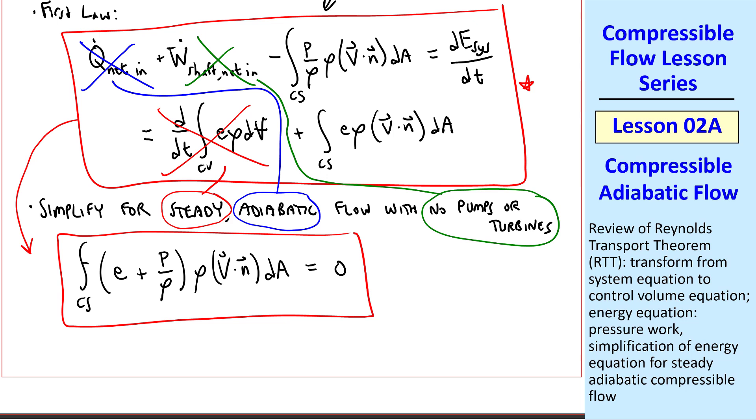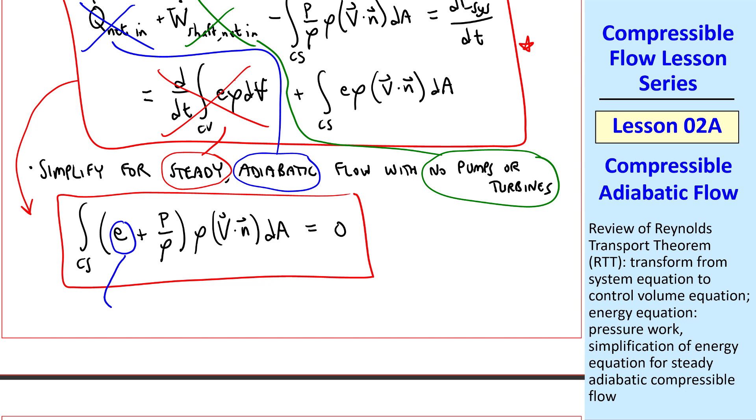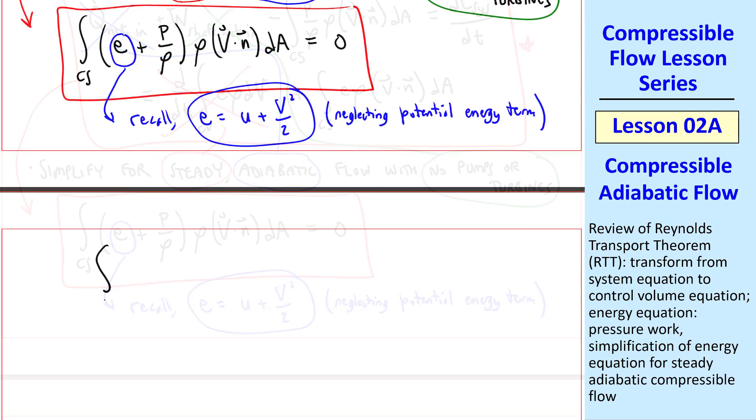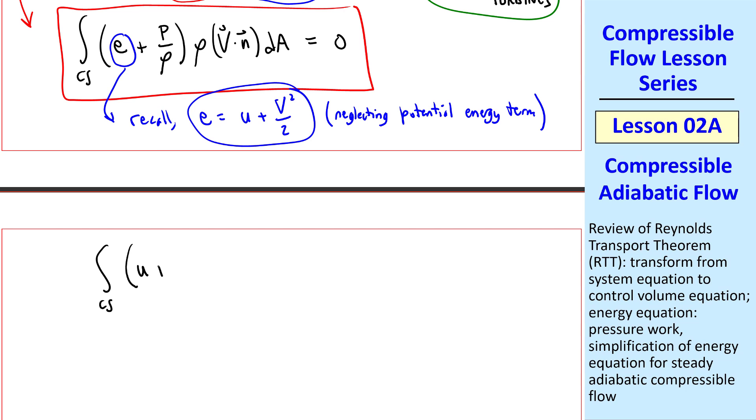Another thing we'll do is recall that specific total energy is specific internal energy, plus specific kinetic energy, where we'll always be neglecting the potential energy term, since we're dealing with gases at high speed. Plugging this into the equation, we get the integral over the control surface of quantity U, plus p over rho, plus V squared over 2, rho, V dot N, dA, equals zero. But alert students should recognize this grouping of terms as H, or specific enthalpy.